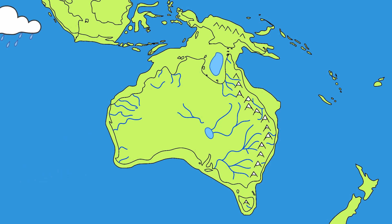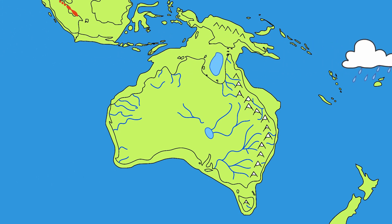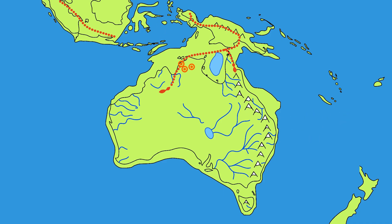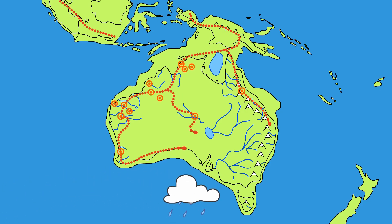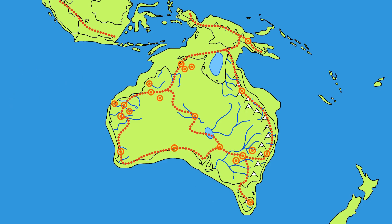Dating materials from the past helps scientists observe patterns in the story of people and country. These patterns help us to answer questions like: when did people first arrive in Australia? How did Aboriginal and Torres Strait Islander cultures differ in one place and time compared to another? What was the climate and landscape like at different times? Radiocarbon dating is an important scientific technique for telling the deep time story of Australia.